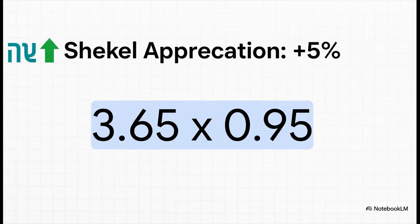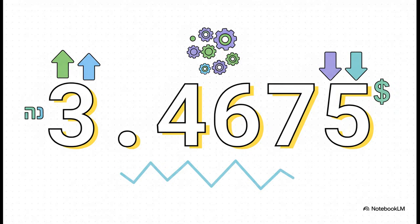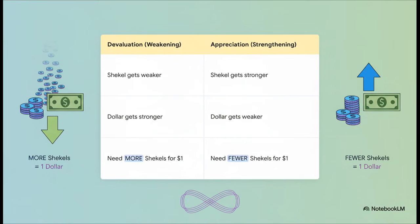Let's run the numbers one more time. With a 5% appreciation of the shekel, we take our base rate of 3.65 and multiply it by 0.95, and we get a new, lower number — $1 now only costs about 3.47 shekels. The price of the dollar went down for you because your currency got stronger. Here's a perfect side-by-side: devaluation means your money gets weaker, so you need more of it to buy foreign currency. Appreciation means your money gets stronger, so you need fewer. They're just two sides of the same coin.